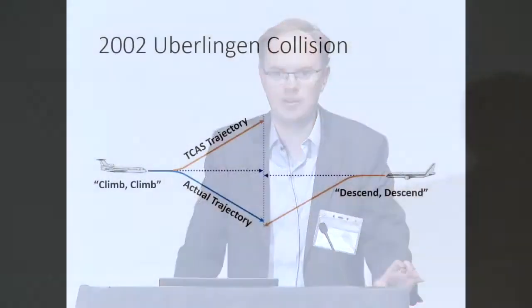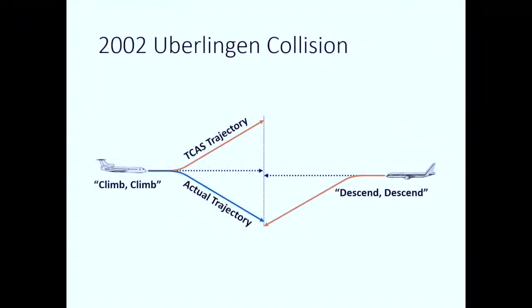To illustrate the challenge with TCAS, I'll talk about the 2002 Überlingen collision. But before I do that, I want to emphasize that TCAS represents a major success story for the FAA. Since TCAS was deployed, there have been exactly zero mid-air collisions over the United States involving TCAS. TCAS is not required equipment on small general aviation aircraft like iFly — they don't meet the minimum weight and passenger requirements.